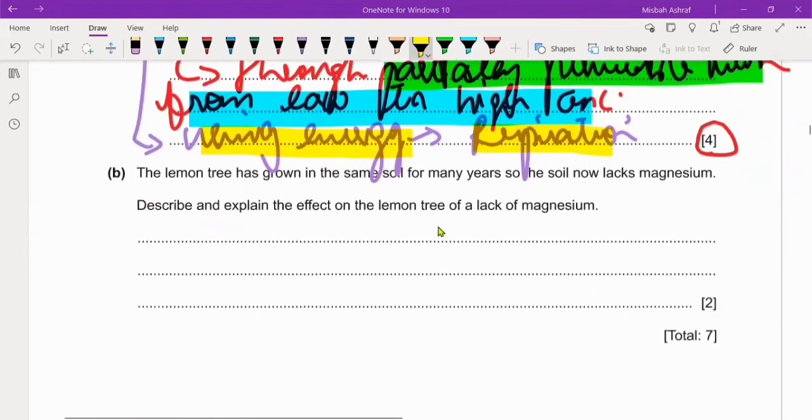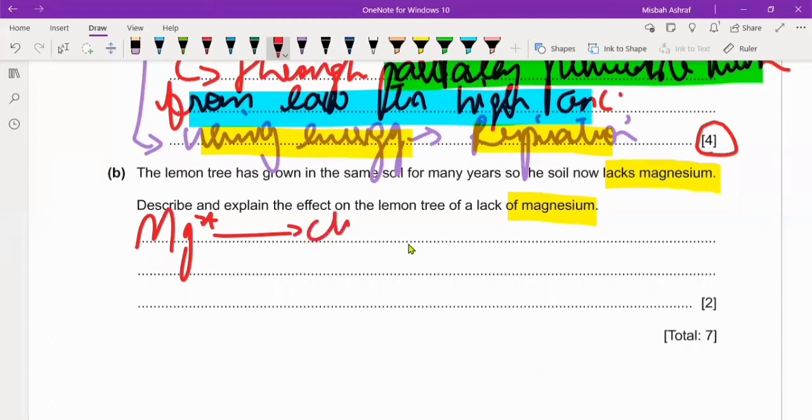Next, let's see. The lemon tree has grown in the same soil for many years, so the soil now lacks magnesium. Soil is actually deficient in magnesium. Describe and explain the effect on the lemon tree of a lack of magnesium. Magnesium is required for making chlorophyll, right?